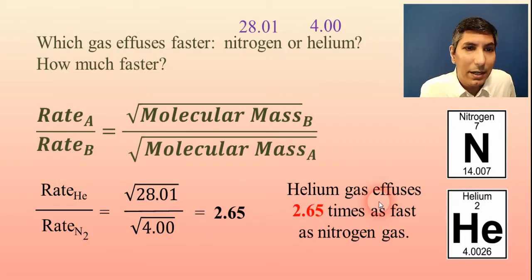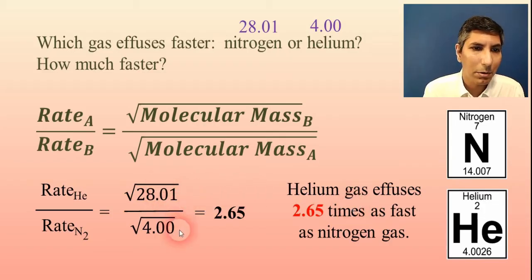This equation looks fairly intimidating. But all you have to do is find the molecular masses of these gases and then just plug them in. Larger number square root over the smaller number square root and get the ratio. So hopefully that's not too difficult.